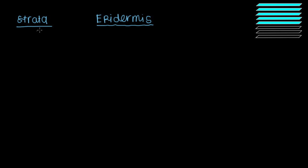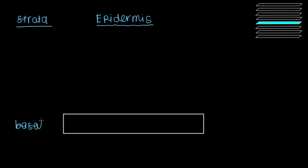strata. So five layers, or strata. And each strata, or stratum, has its own important characteristics. So we'll start from the bottom and talk about the deepest or bottom-most layer of the epidermis, and that's known as the stratum basale, or the basal layer.